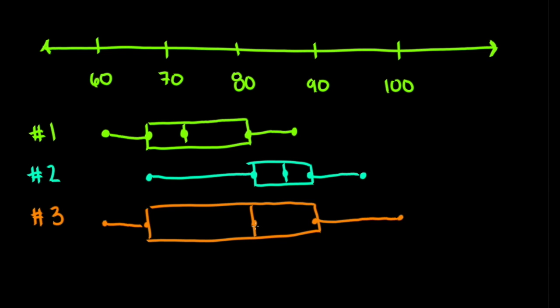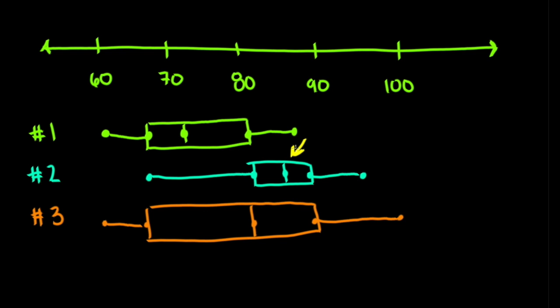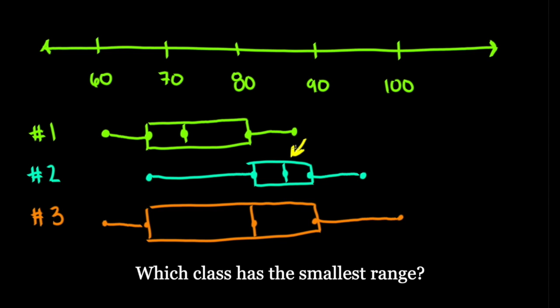By analyzing box and whisker plots for different distributions you can easily make comparisons between them. Let's compare these three different box and whisker plots, which represent different classes who took the same test. The first question asks which class has the highest median. The median is the dot in the middle of the box. Out of these three classes, class number two has the highest median, as their middle dot is higher than the medians of the other two classes.